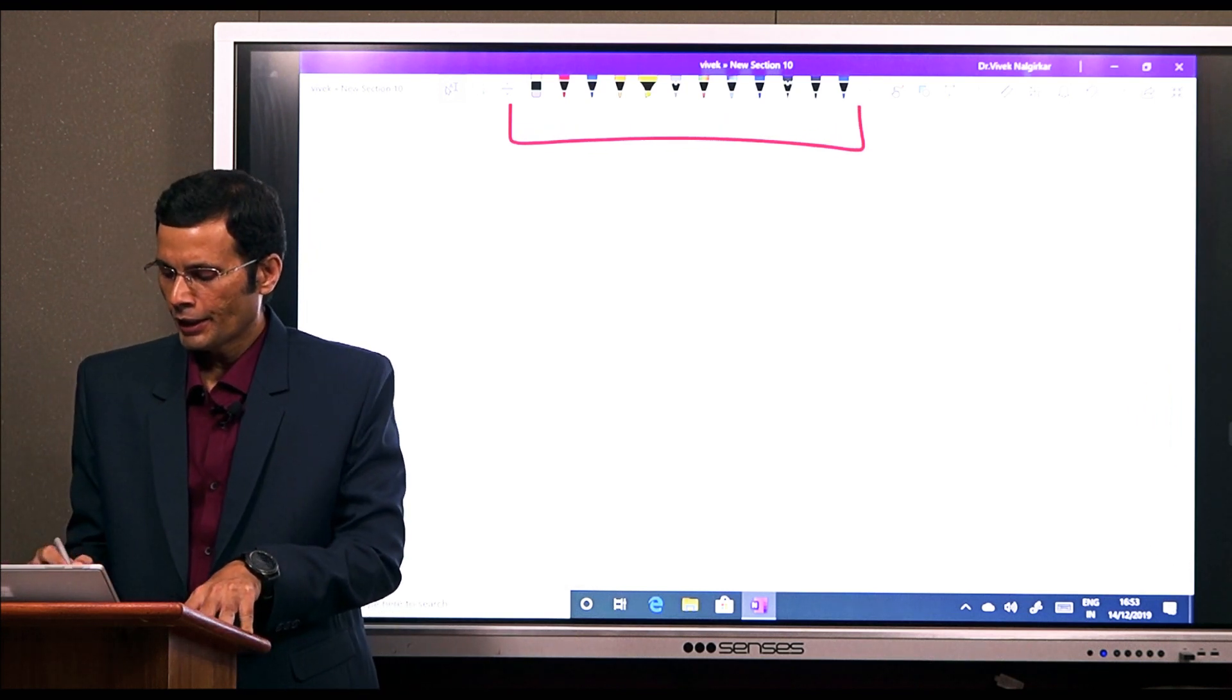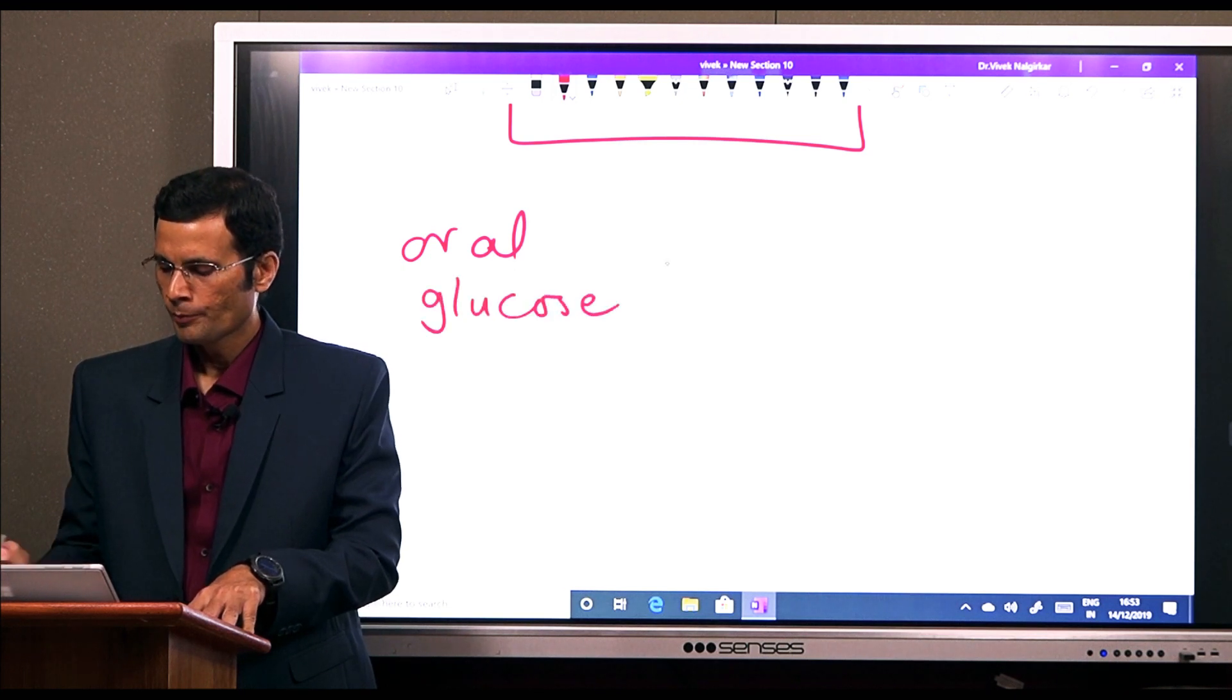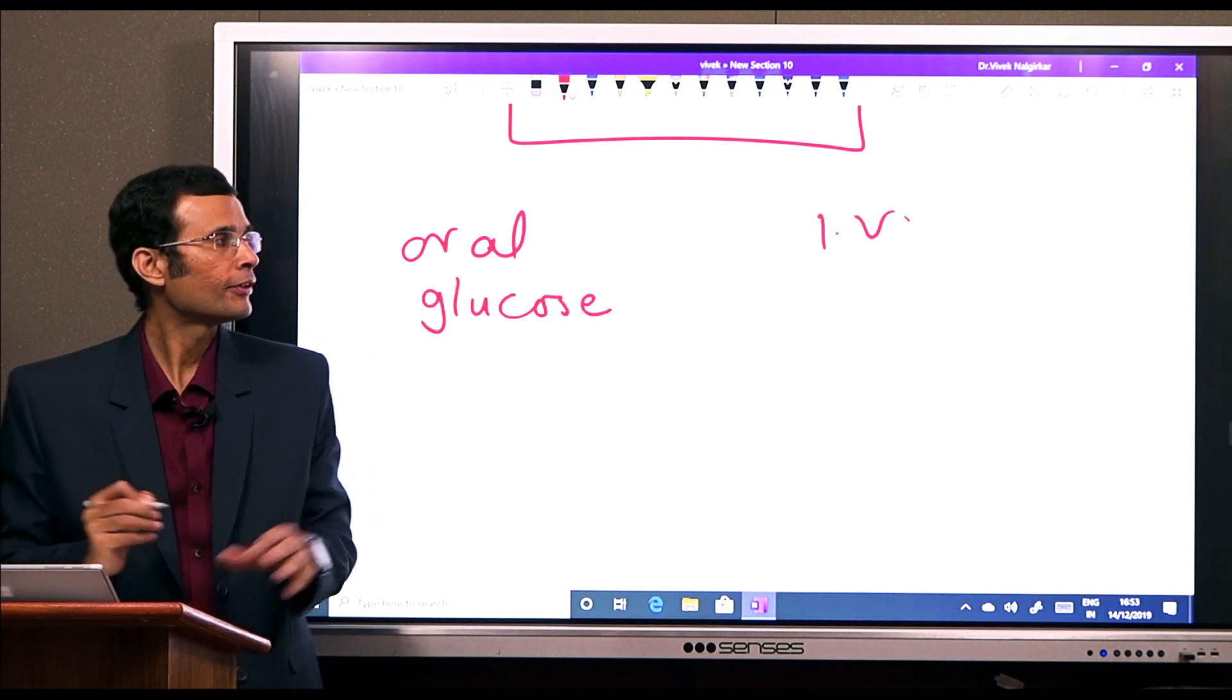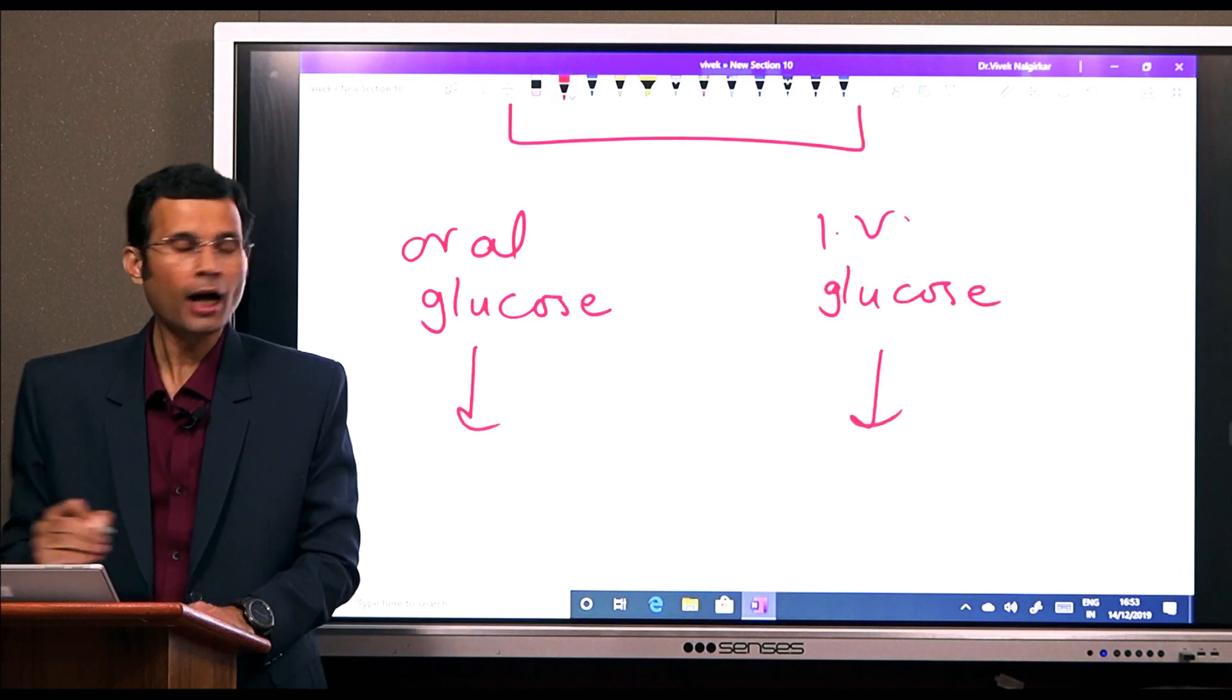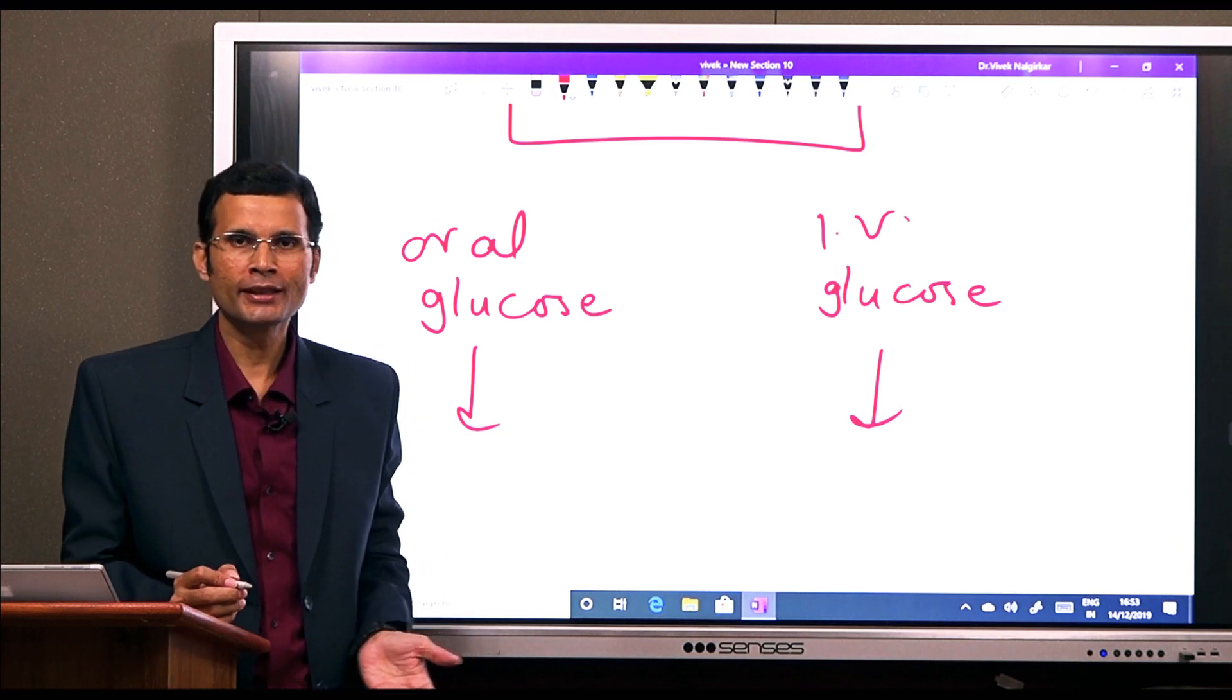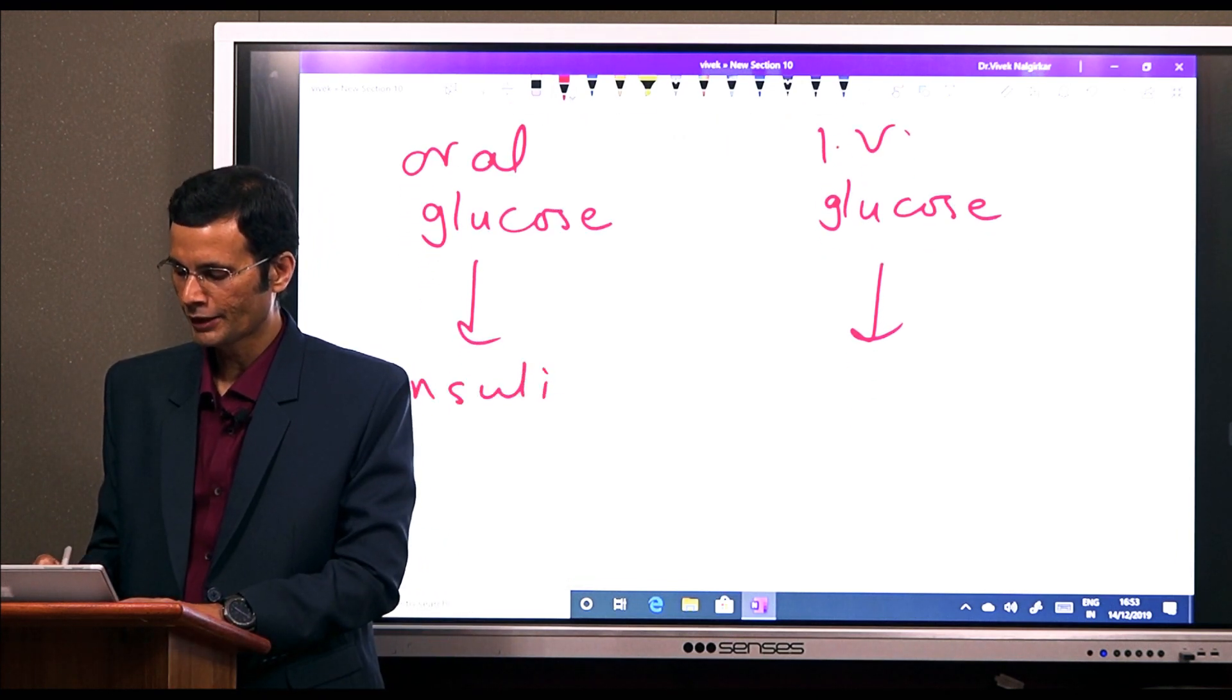You know, if you give oral glucose and if IV glucose is given, both are going to cause insulin secretion. Naturally there will be an insulin secretion.